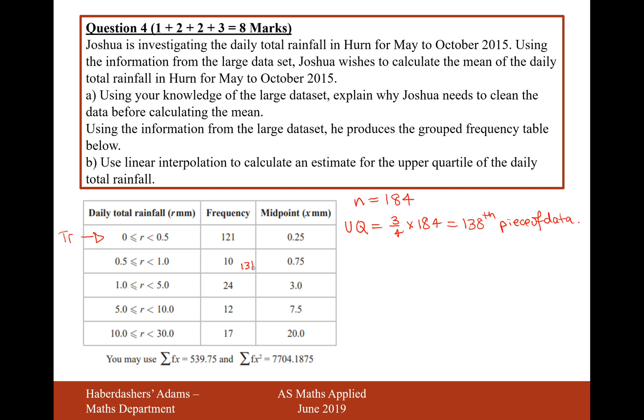So let's do a little running total. 121, this is going to be 131, this is going to be 155. So it looks like we've got 131 pieces of data up to this point, and then we have all the data from 132 up to 155 in this group. So it looks like it's going to be in this group here.